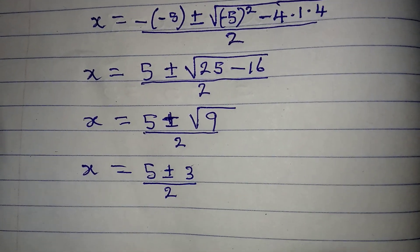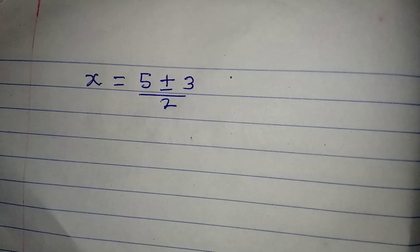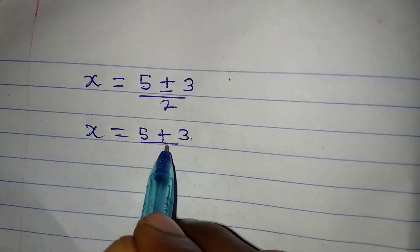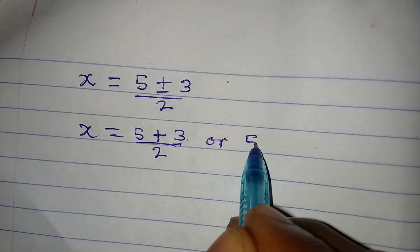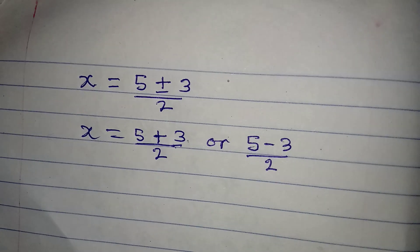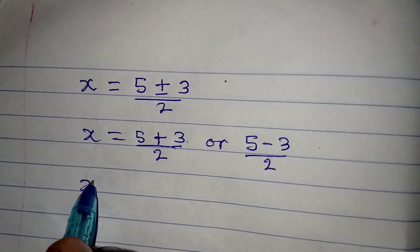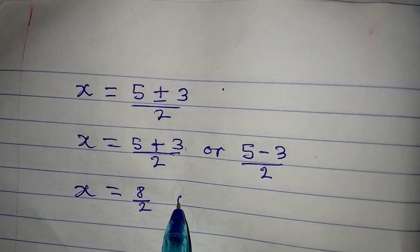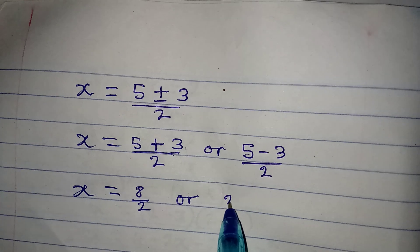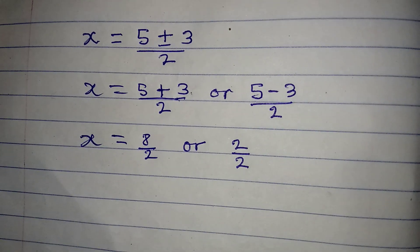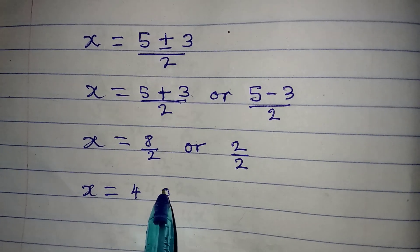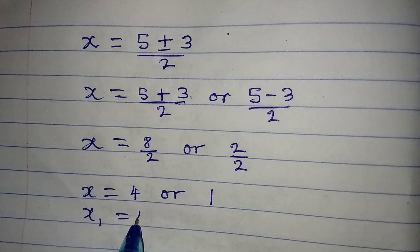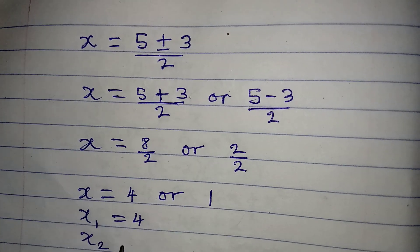This gives us x equals (5 plus 3) over 2 or (5 minus 3) over 2, which is 8 over 2 or 2 over 2. So x₁ equals 4 or x₂ equals 1.